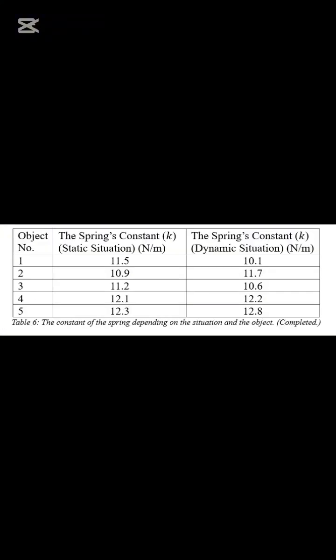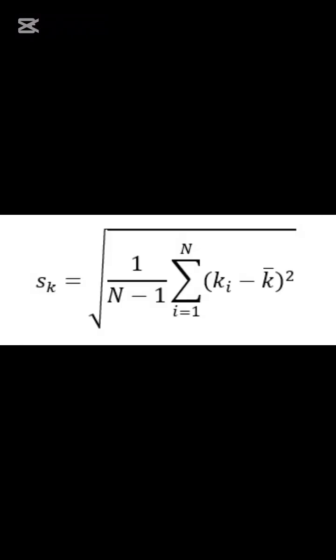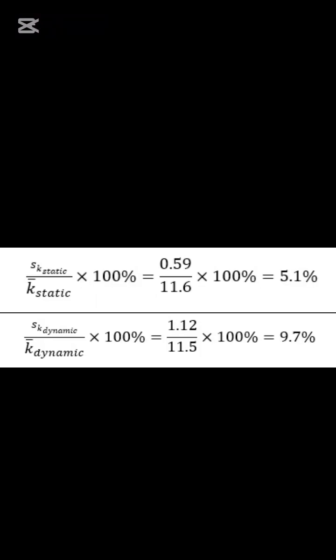At the end, we had these results for the spring constant. To have a better understanding of the consistency of the spring, we are going to use this standard deviation equation. It is going to show how much the spring constant spread. These were our standard deviation results. You can see that the dynamic situation spread nearly double the static situation. This is because of the increase of the uncertainty in the dynamic situation. Considering the errors, we can say that our results were pretty consistent.